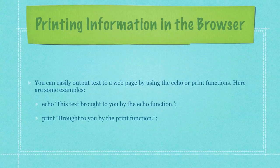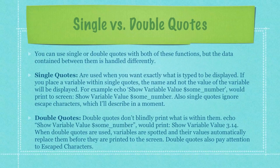You can easily output text to a web page by using the echo or print functions, and here are some examples. You can see here I'm using the echo function to output to the screen the text 'brought to you by the echo function,' and I'm doing something similar with the print function. So what's the difference between single versus double quotes? You can use single or double quotes with both echo and print but the data contained between them is handled completely differently. Single quotes are used when you want exactly what is typed to be displayed. If you place a variable within single quotes the name and not the value of the variable will be displayed. Single quotes also ignore escape characters, which I'll describe in a moment.